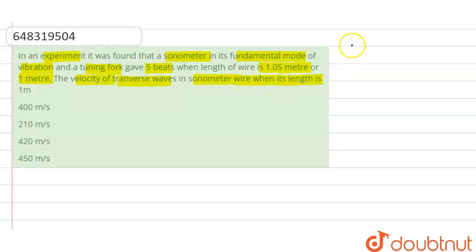The first length of the wire is 1.05 meter and the second length of the wire is one meter. We are getting 5 beats. If we take the difference between the fundamental frequencies of these two sonometer wires, we will get 2 into 5 beats, equal to 10 beats.